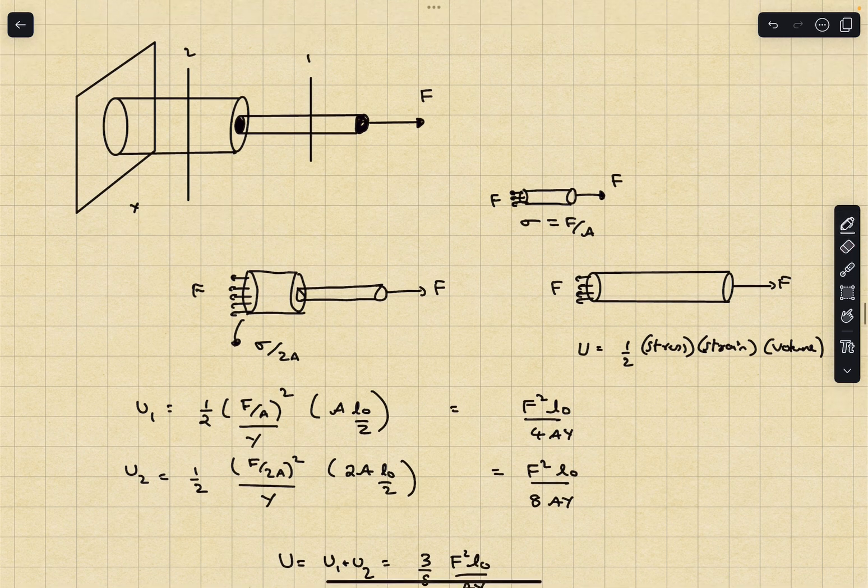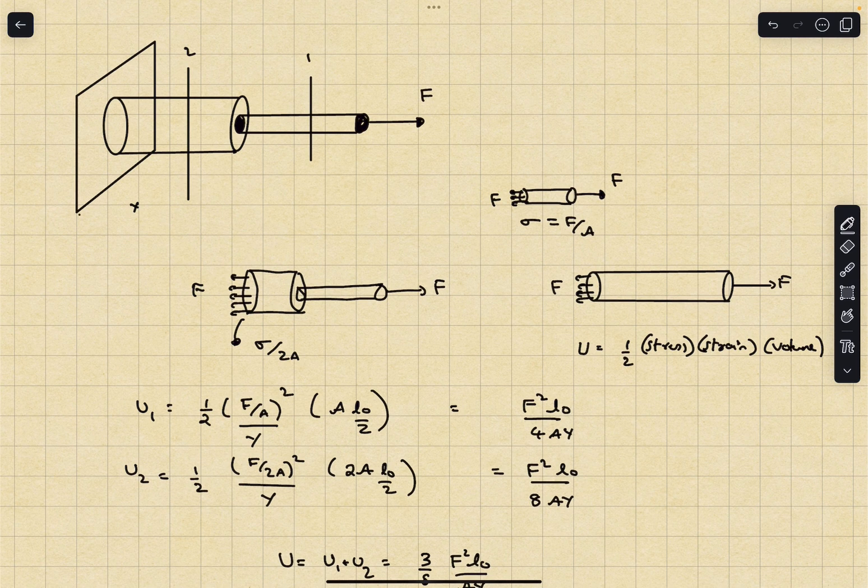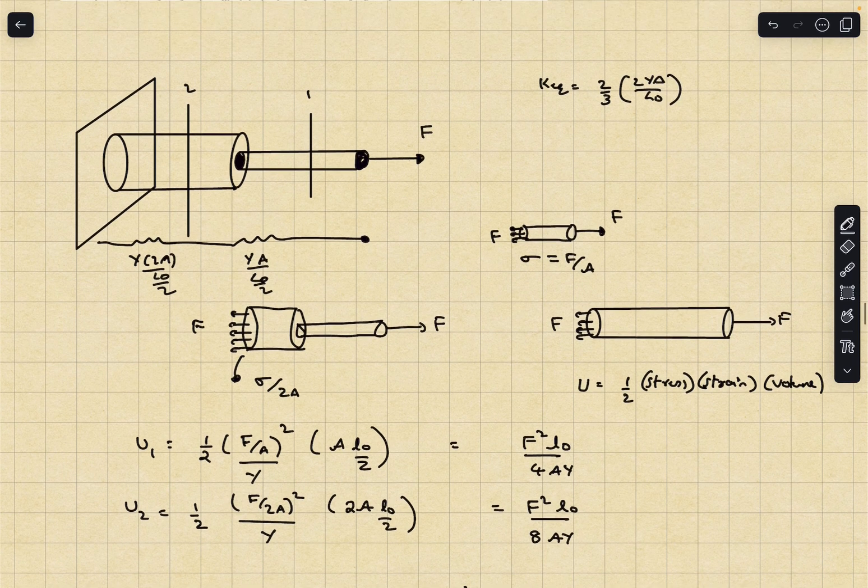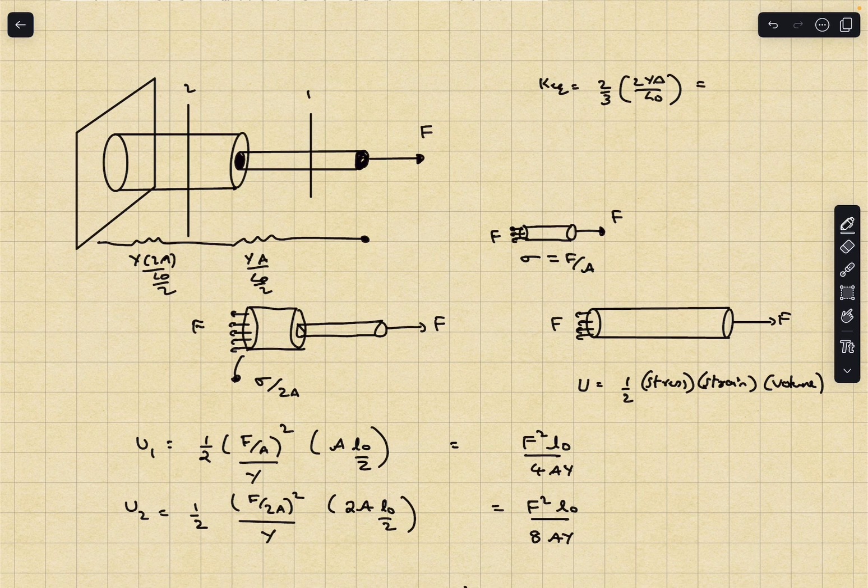Now let's solve it with the spring method. I can replace this setup with two equivalent springs. The equivalent spring constant K1 is YA times 2 divided by L0 by 2, and K2 is YA divided by L0 by 2. This is like K and 2K kept in series. The K equivalent comes out to be two-thirds of the smaller spring constant which is 2YA upon L0. Using the formula K1K2 upon K1 plus K2, this comes out to be 4YA upon 3L0.